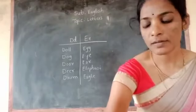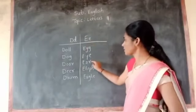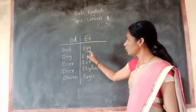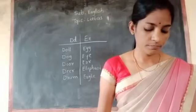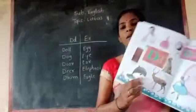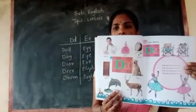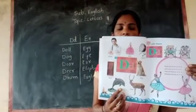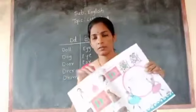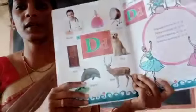D related words and E related words. How to read, how to write. Open your book, page number 18.